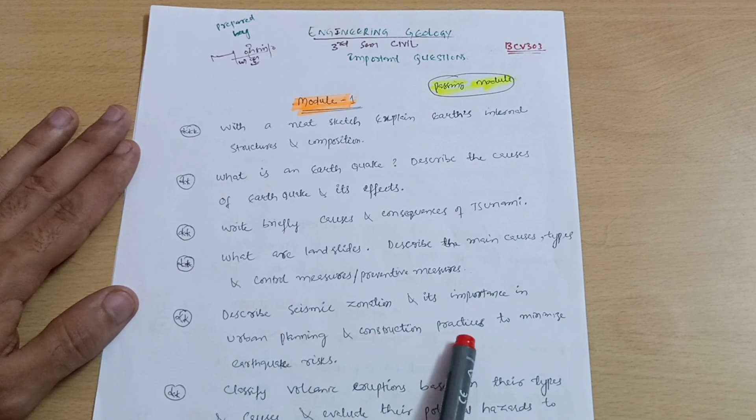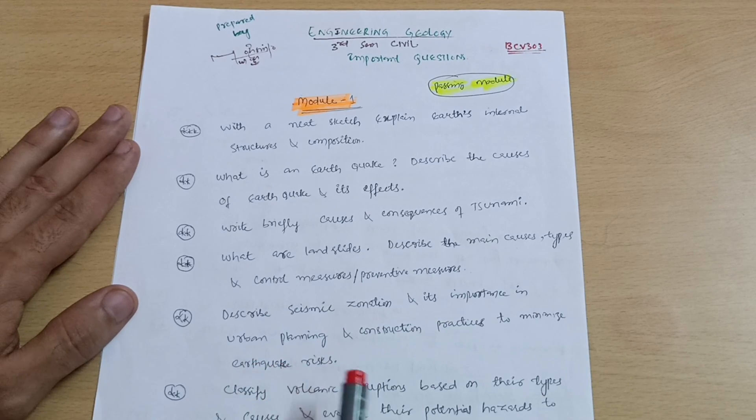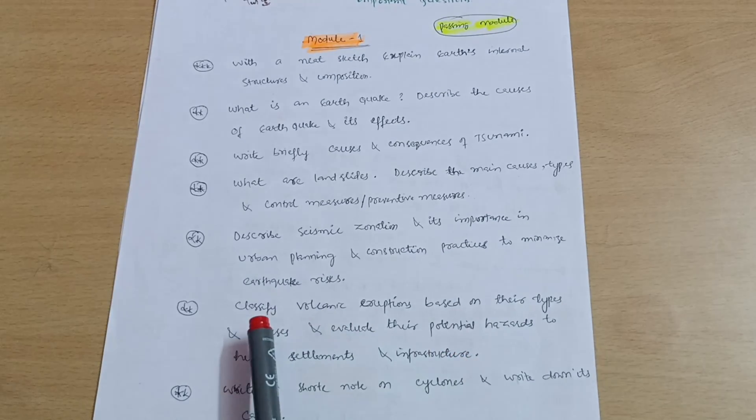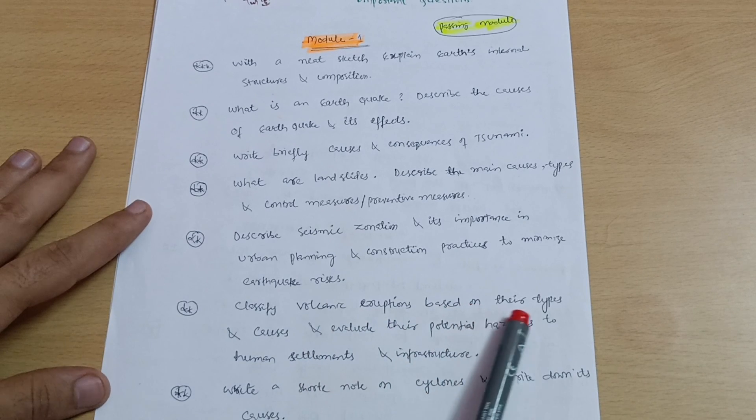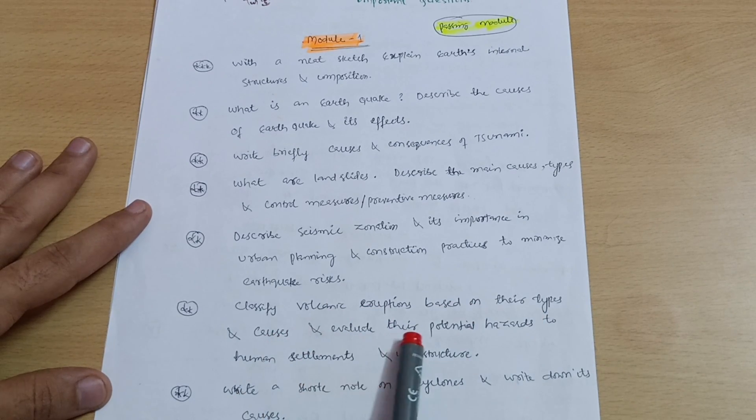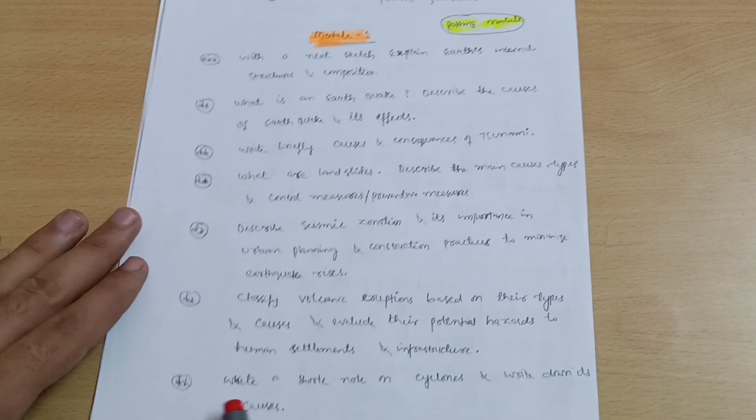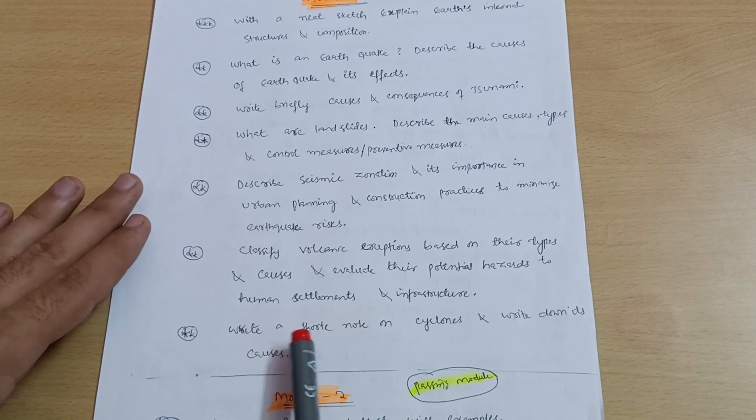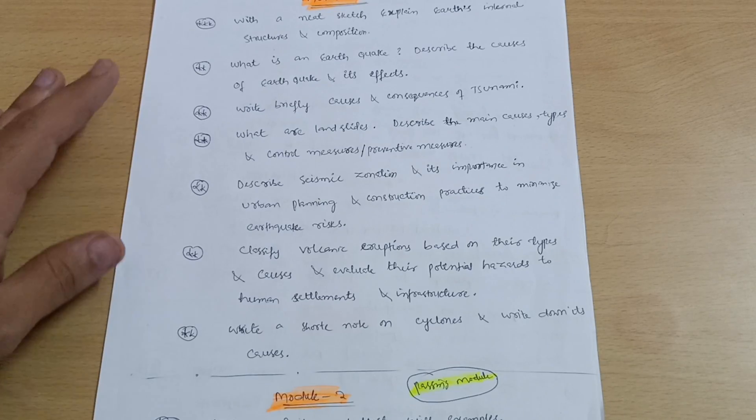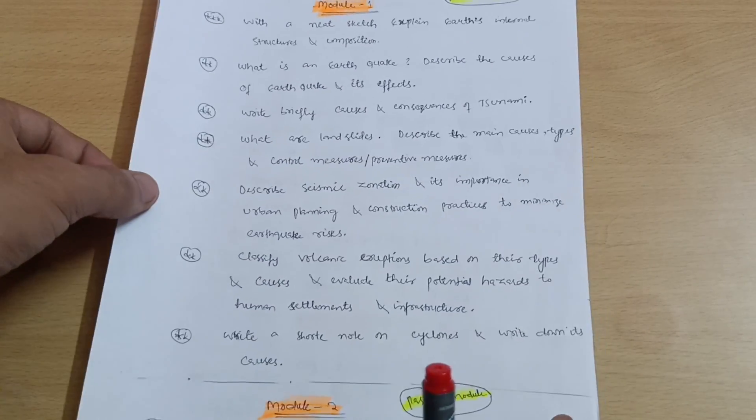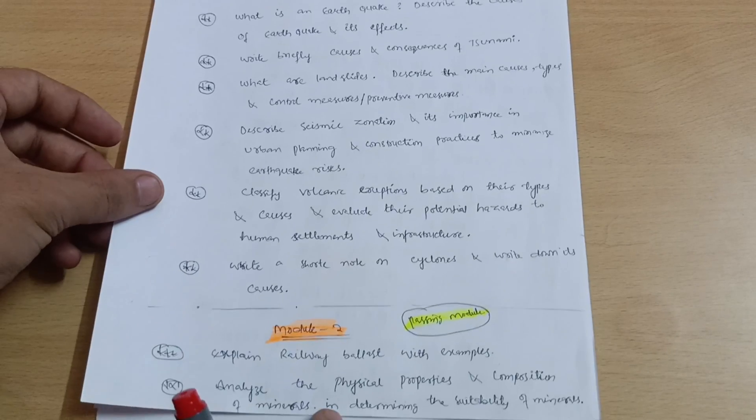Write briefly causes and consequences of tsunami. What are landslides? Describe the main causes, types, and control measures or preventive measures. Describe seismic zonation and its importance in urban planning and construction practices to minimize earthquake risks. Next possible question may be classify volcanic eruptions based on their types and causes, and evaluate their potential hazards to human settlements and infrastructure.